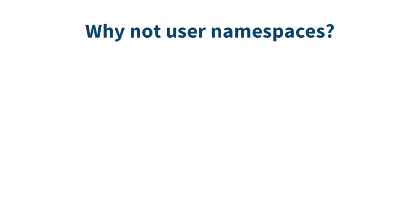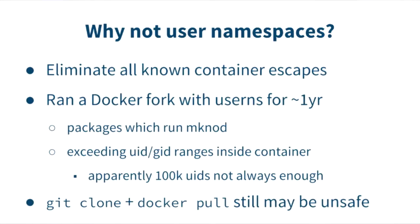Who here knows what Linux user namespaces are? User namespaces actually do eliminate the known container escapes. They do this by translating UID 0 — which is root — to the Linux kernel. Inside the container, UID 0 gets mapped to a much higher UID outside the container, and gets subject to all the user limitations that any normal user on Linux would have. We actually ran a fork of Docker with user namespaces kludged in for about a year — it worked really well and was really fast.